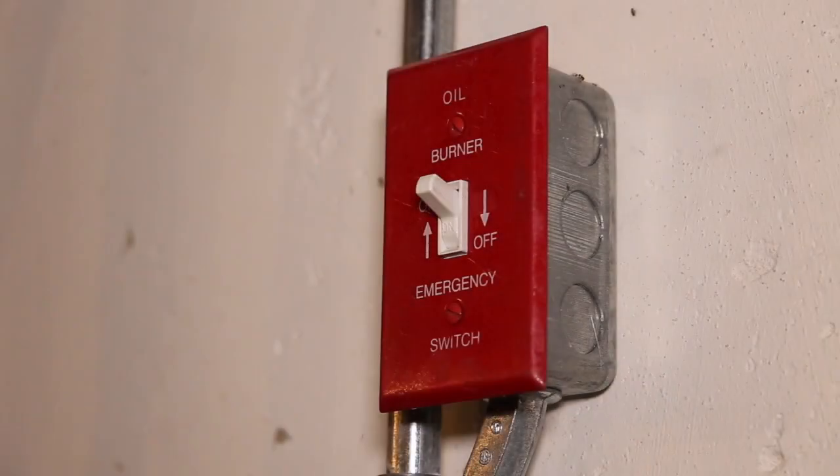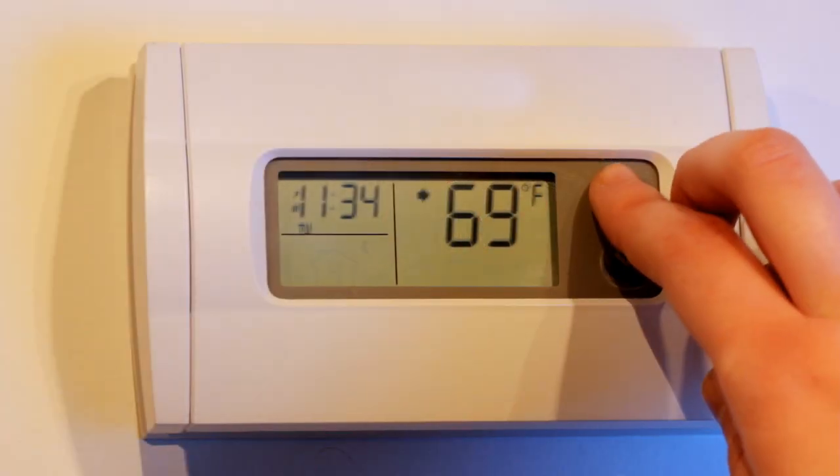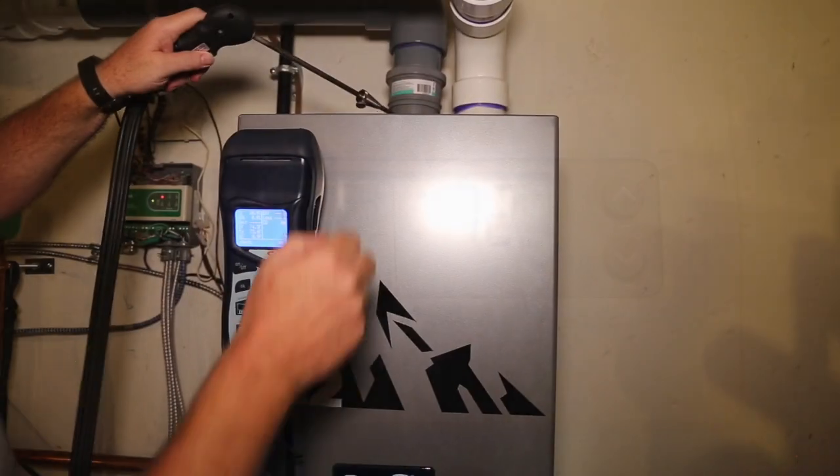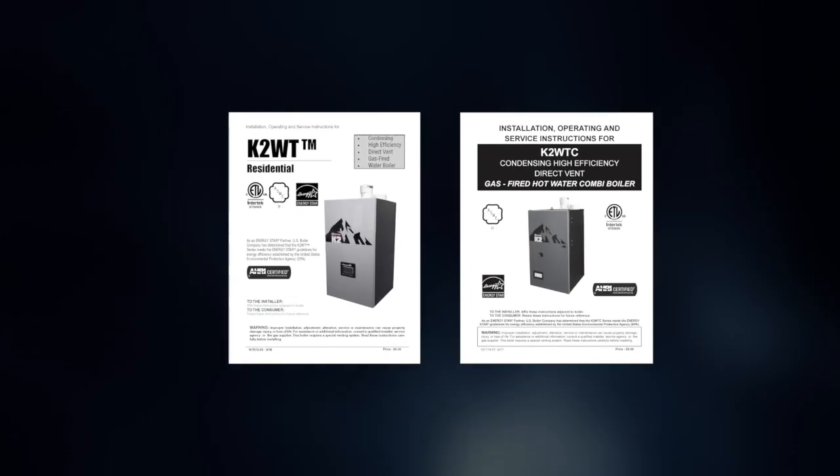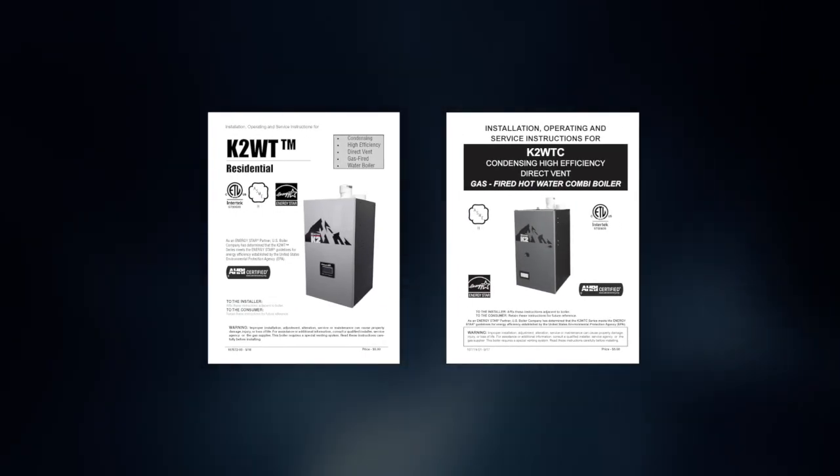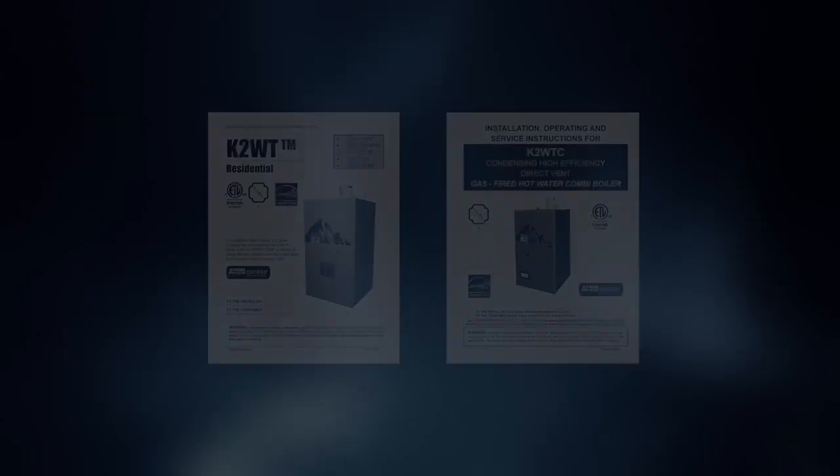Then, after you turn on the electricity to the boiler, establish a demand for the boiler to heat and perform a combustion test. Check and adjust the boiler combustion to specifications per the instructions in the K2 or K2 combi boilers installation and operations manual.